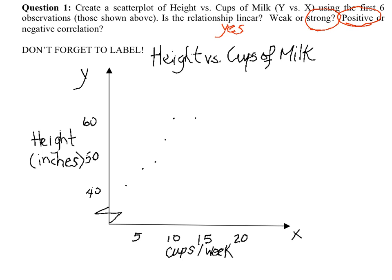Ultimately, if the dots look like this, we could say the relationship is linear and strong — but because as the x values get higher, the y values go lower, this would be a negative relationship. So in that case, we'd see a strong, linear, negative relationship.